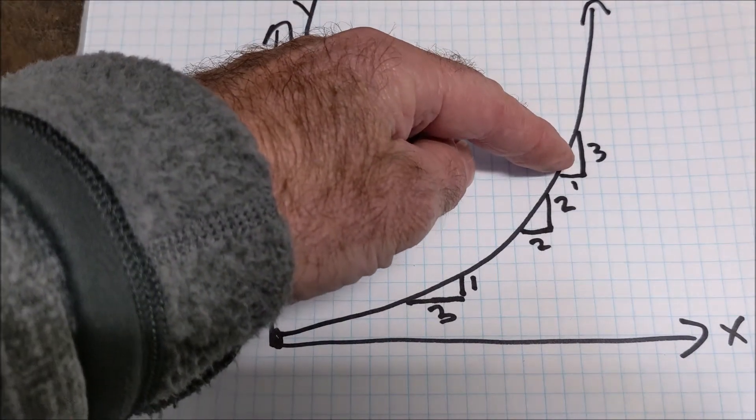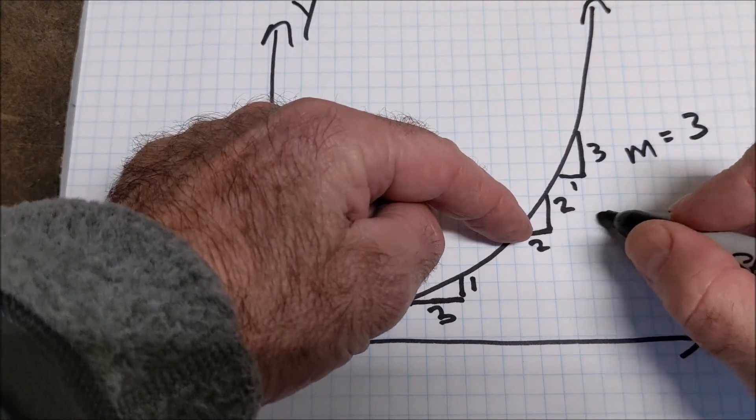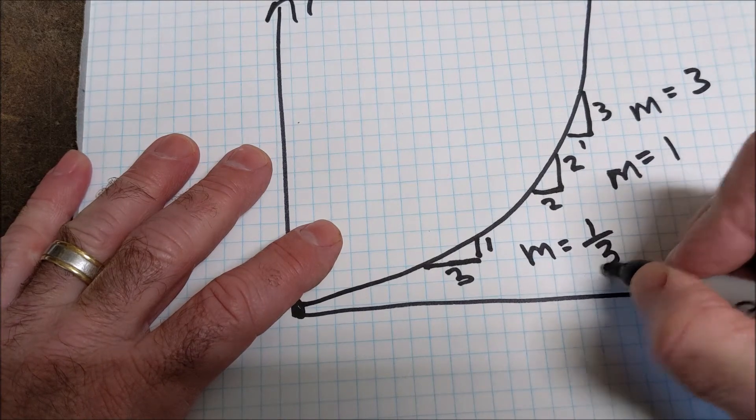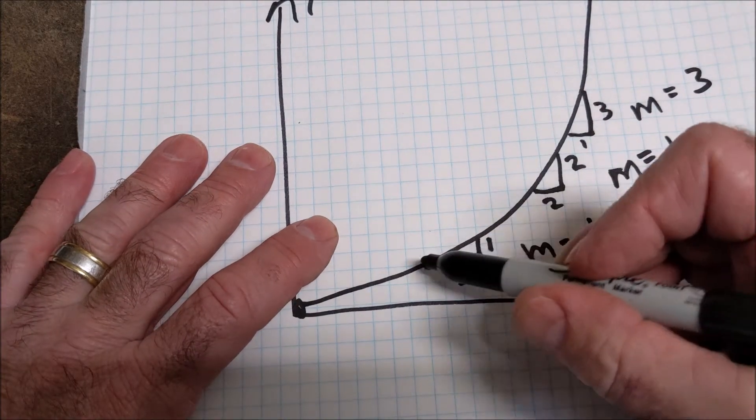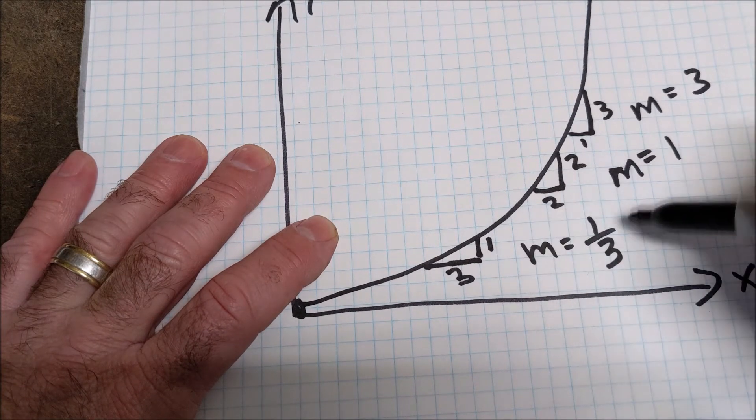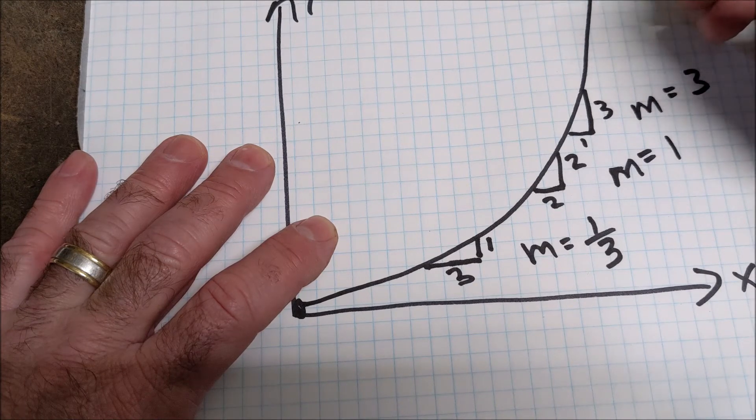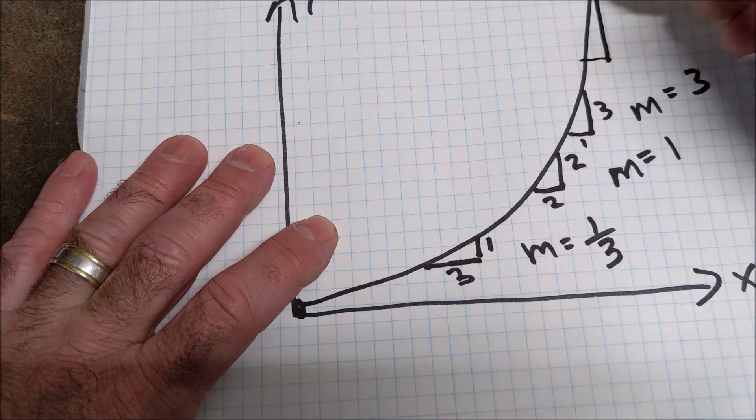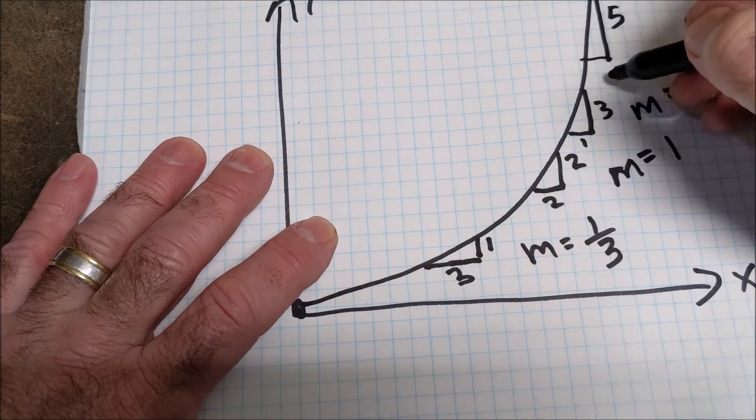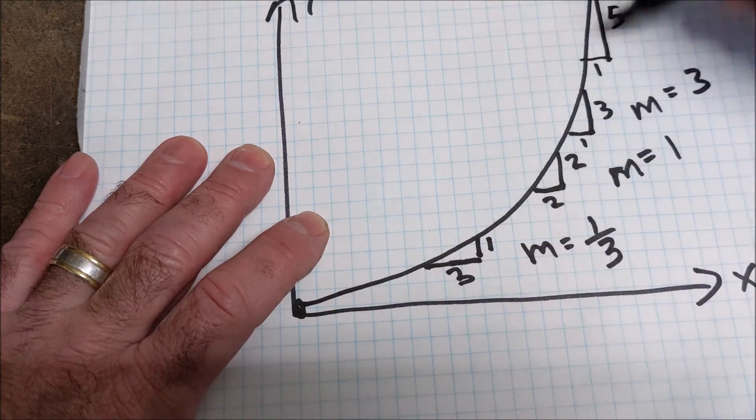So here the slope is rise over run three over one. Here the slope is two over two, which is one. Here the slope is rise over run one over three. So as I travel along this curve, I'm increasing at an increasing rate. From here to here, I increase by two thirds. From here to here, I increase by two. Eventually I'm going to get to this place where I'm rising a whole lot and running very little. So here, let's say I rise five and I run one. So it increases at an increasing rate and it's a concave graph.